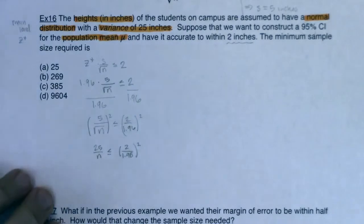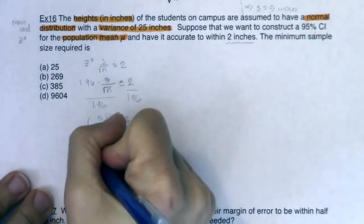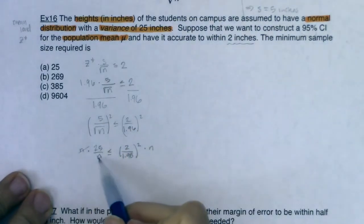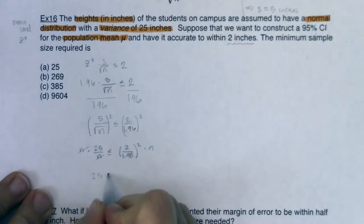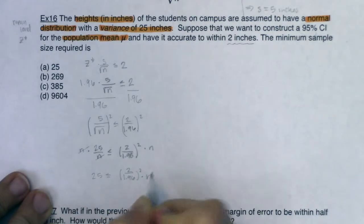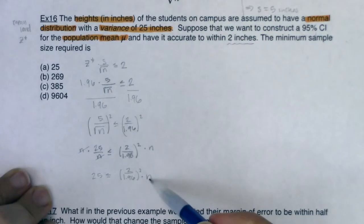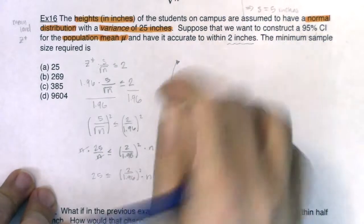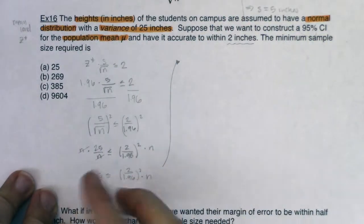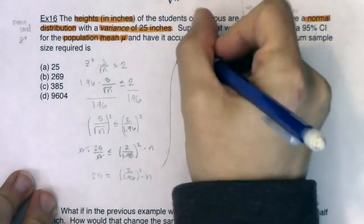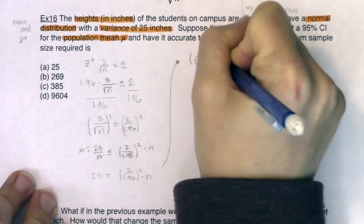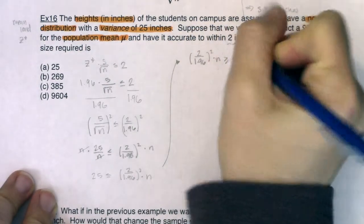The next thing I'm going to do is I need to get that n out of the denominator. So I'm going to multiply both sides by n here. And when I do that, these are going to cancel, which is great. So I have 25 is less than or equal to 2 over 1.96 squared times n. And again, for me personally, I like it when my variable is on the left side of the inequality. That's just typically where I put them. So I'm going to switch spots here. And when I switch spots, I also need to switch the direction of this inequality.